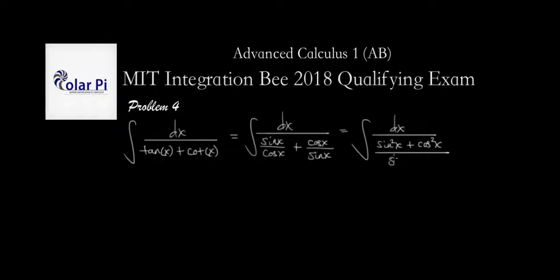Right — the common denominator is sine x times cosine x. And we recall from trigonometry that sine squared x plus cosine squared x is one.